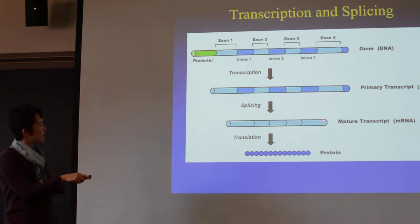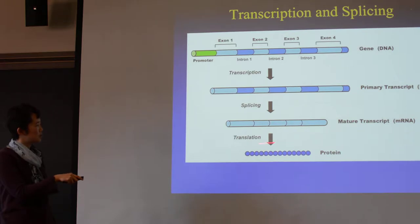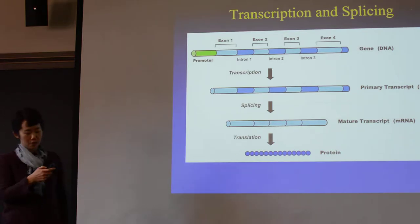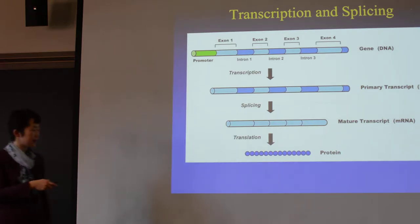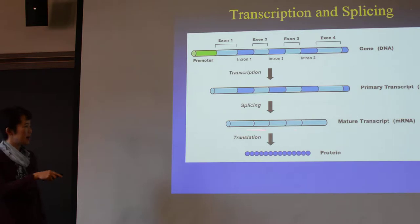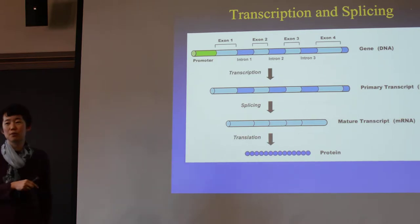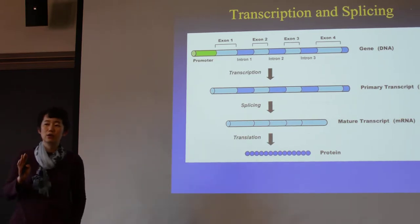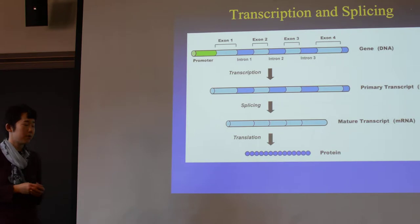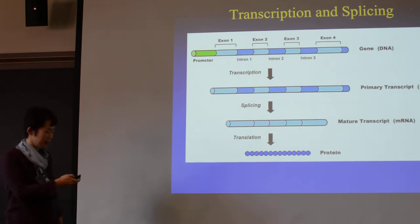And then this will go out from the nucleus to the cytoplasm to be translated into a protein. So we want to know how the RNA are transcribed. Ideally we want to know the protein, but right now the proteomics approaches are not as accurate as the RNA approaches.